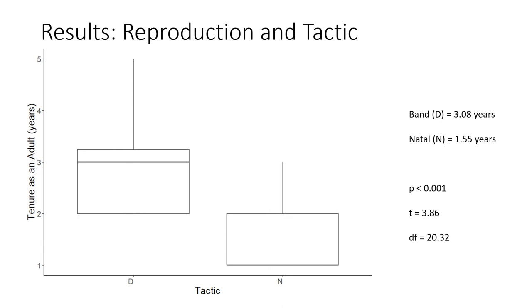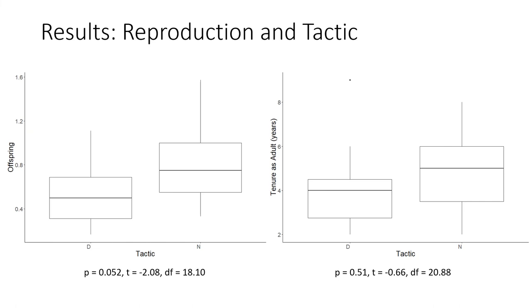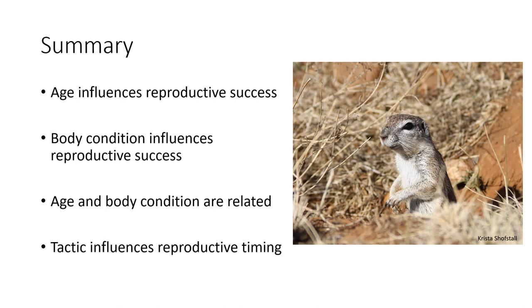Although tactic did not have any significant effect on the number of offspring sired each year, when looking at individuals who remained on site after dispersal, we compared age at first reproduction between tactics. Individuals who reproduced first as natal males were nearly half the age of individuals who did not have success until after they dispersed. Additionally, those who reproduced first while natal showed higher annual average reproductive success than those who waited. There was no significant difference in tenure as an adult between the two groups, and both were on site for just over four years on average.